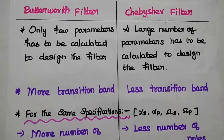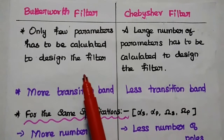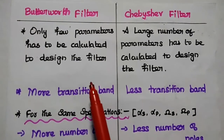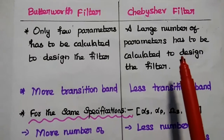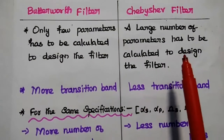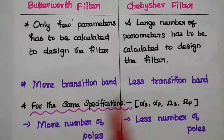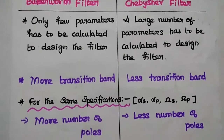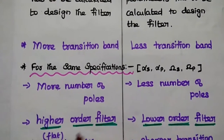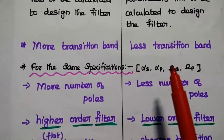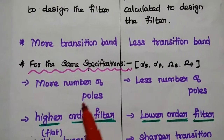In the Butterworth filter, only a few parameters have to be calculated to design the filter. But in the Chebyshev filter, a large number of parameters have to be calculated. Also, the Butterworth filter requires more transition band, whereas the Chebyshev filter requires less transition band.